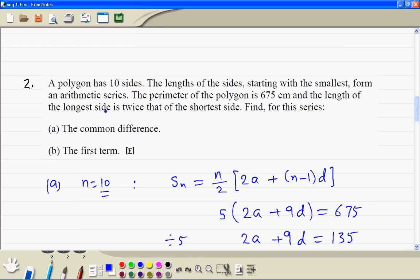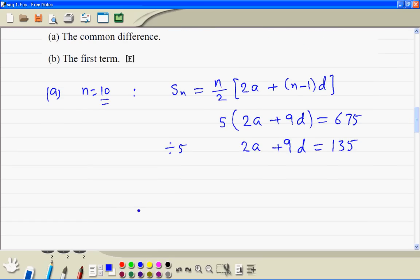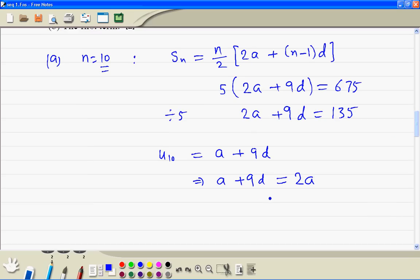Then from the question, the longest side is twice the shortest side. So the tenth side is equal to a plus 9d. If we take a to the left-hand side, we get minus a plus 9d is equal to 0. So this is equation 2.